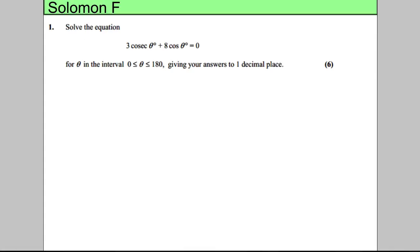In this question, we're asked to solve 3 cosec θ plus 8 cos θ equals 0 for θ in the interval 0 to 180 degrees, giving your answer to one decimal place.